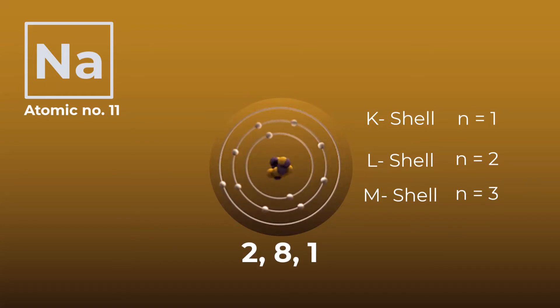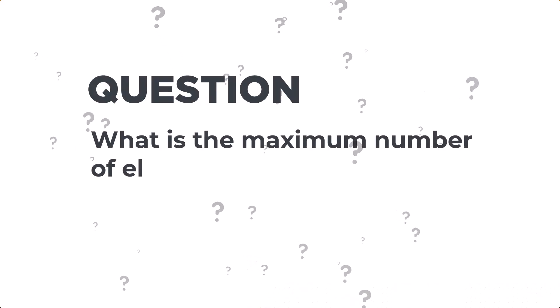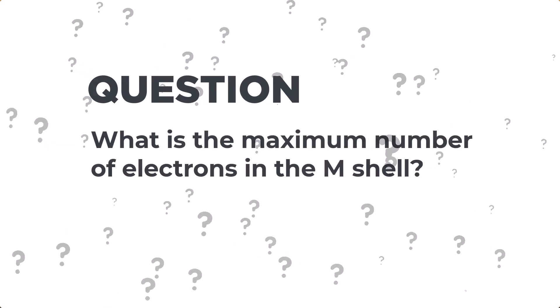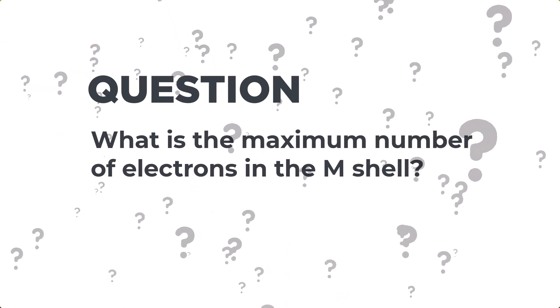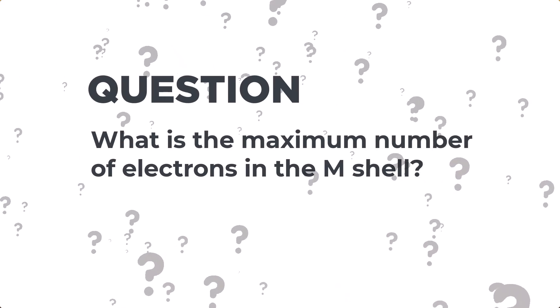I hope this makes sense. To verify that you do actually understand this concept, I leave this question with you. What is the maximum number of electrons in the M shell? I'll tip you off by letting you know that the M shell has a quantum number of N equals 3.